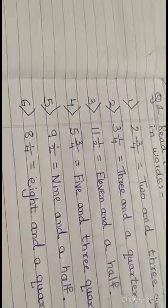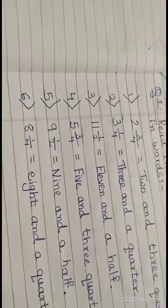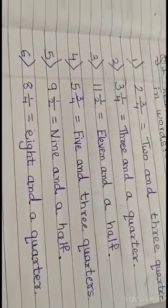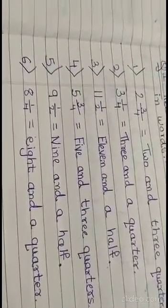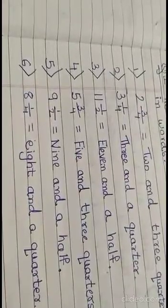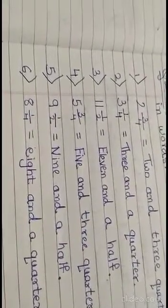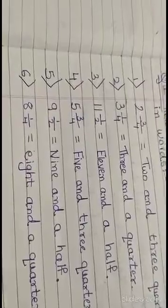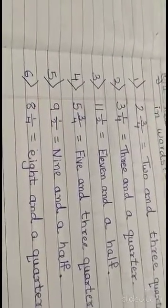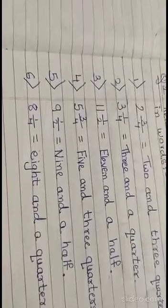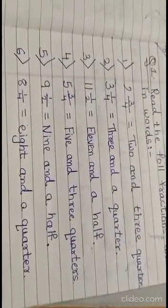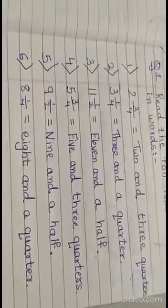Now the fourth one: 5 and 3 upon 4 — that is 5 and 3 quarters. Number 5: 9 and 1 by 2 — that will be written as 9 and a half. Number 6: 8 and 1 upon 4 will be written as 8 and a quarter. So children, this is how you are going to write.